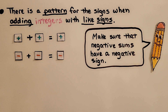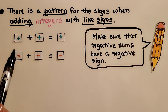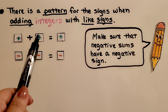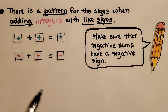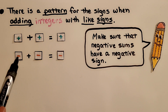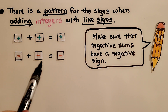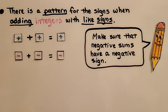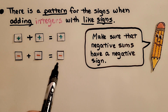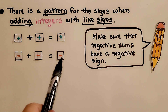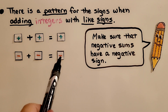There's a pattern for the signs when adding integers with like signs. If we have a positive and a positive, the sum will be positive. If we have a negative and a negative, the sum will be negative. Just make sure that negative sums have a negative sign.